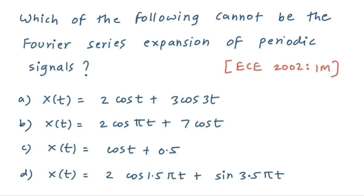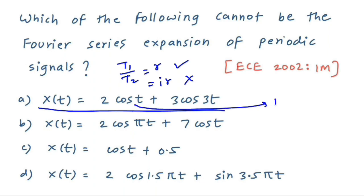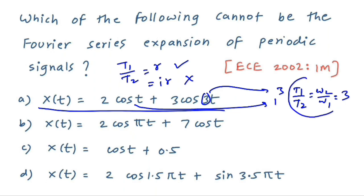To check whether a signal is periodic or aperiodic: if the time ratio T1/T2 is rational, the signal is periodic; if irrational, it is not periodic. Using T = 2π/ω, we get T1/T2 = ω2/ω1. For option A, ω1 = 1 and ω2 = 3, so T1/T2 = 3, which is rational — hence it is periodic and Fourier series can be applied.